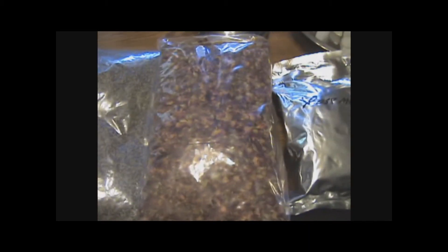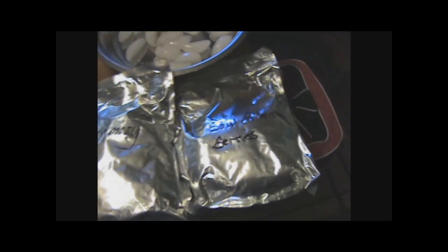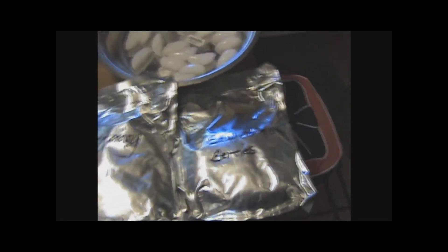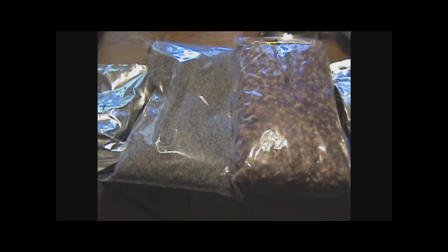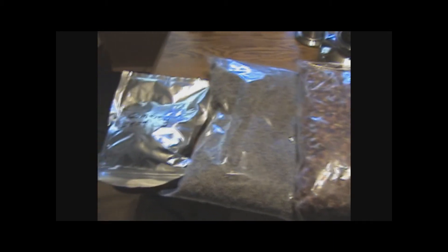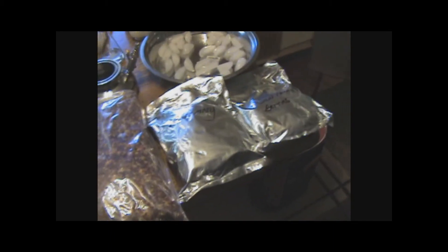This is comfrey leaf already ground up. These are rose petals, rosemary, and saw palmetto berries. You can extract the oil or the chemicals or both from this variety of plant material.